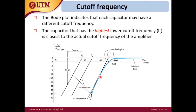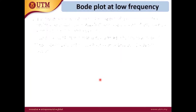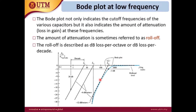The blue line is the actual curve where smoothing is applied, which makes it more realistic and closer to what is actually measured or observed in the Bode plot for the BJT.